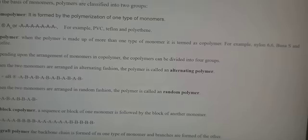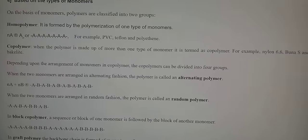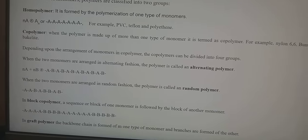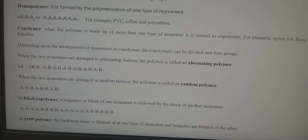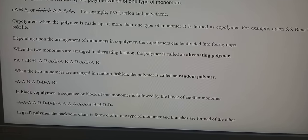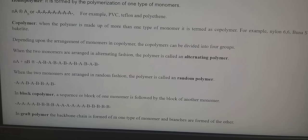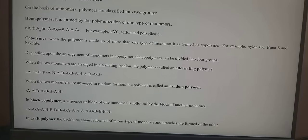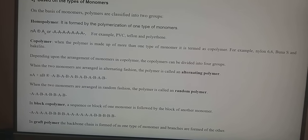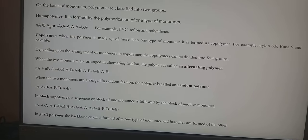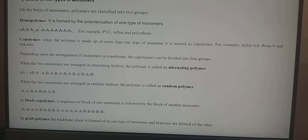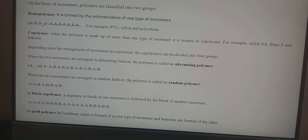The next category is based on the types of monomers. On this basis, polymers are classified into two groups: homopolymers and copolymers. Homopolymers are formed by the polymerization of one type of monomer. Examples include PVC, Teflon, polyethylene, etc. A copolymer is formed when the polymer is made up of more than one type of monomer. Examples include nylon 6,6, Buna-S, Bakelite, and many others.